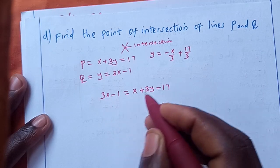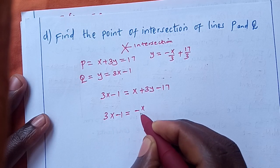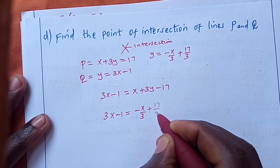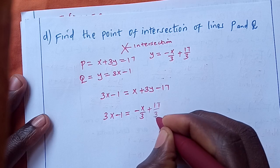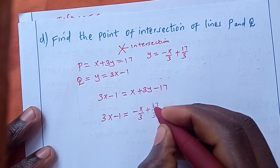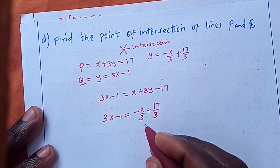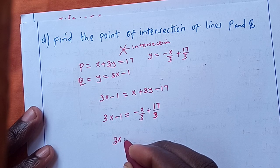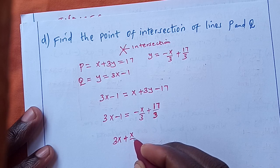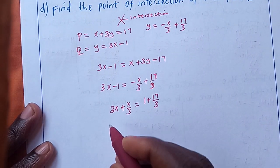Putting like terms together: 3x + x/3 = 1 + 17/3. The LCM is 3, so (9x + x)/3 = (3 + 17)/3, giving 10x/3 = 20/3. We multiply both sides by 3 to eliminate the denominator: 10x = 20.